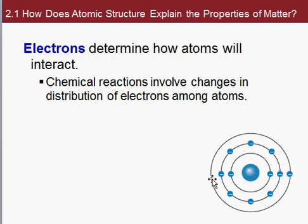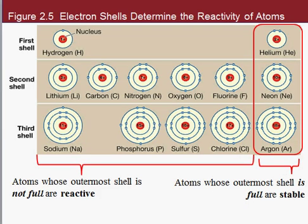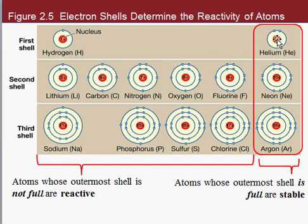Electrons are important — they determine how atoms interact chemically. Electrons are what surround the atoms, so they're what comes in contact with other atoms first. Looking at the periodic table, the first row has hydrogen on the left and helium on the right. They share the first shell. That shell has one electron for hydrogen, two for helium, and then it's filled. That first shell only holds two electrons.